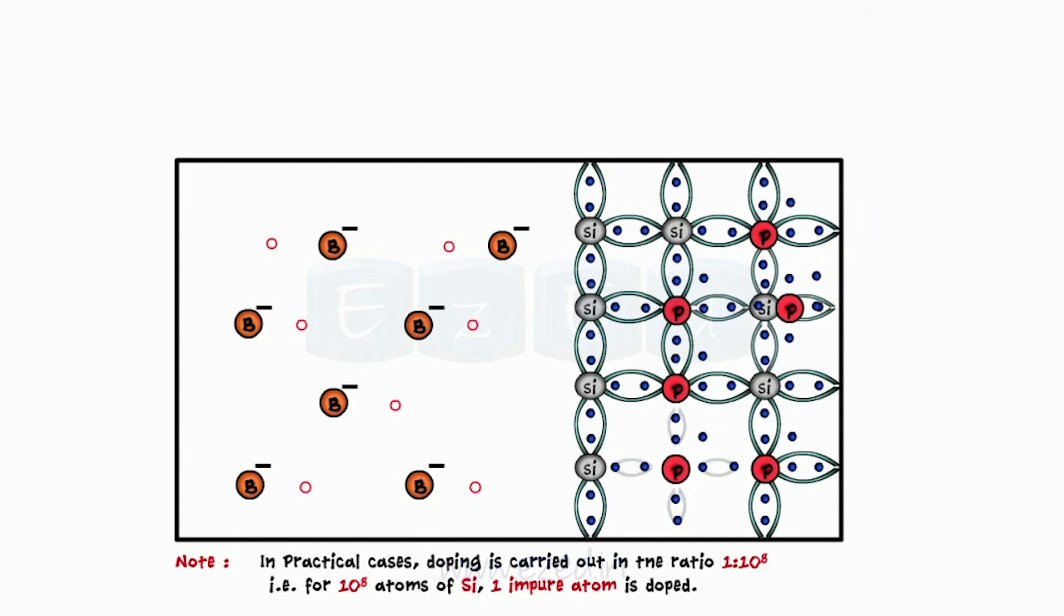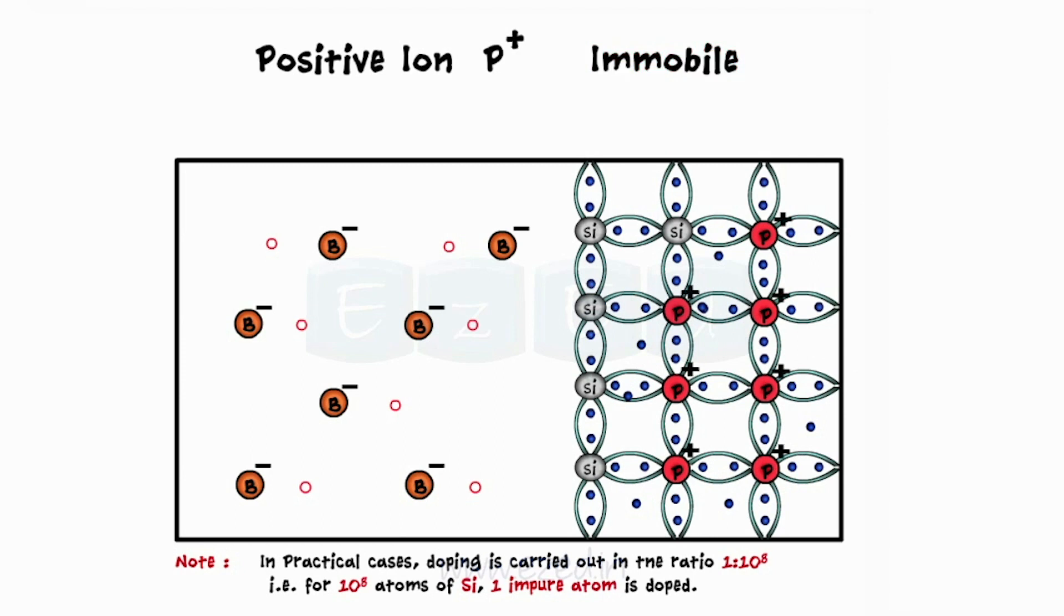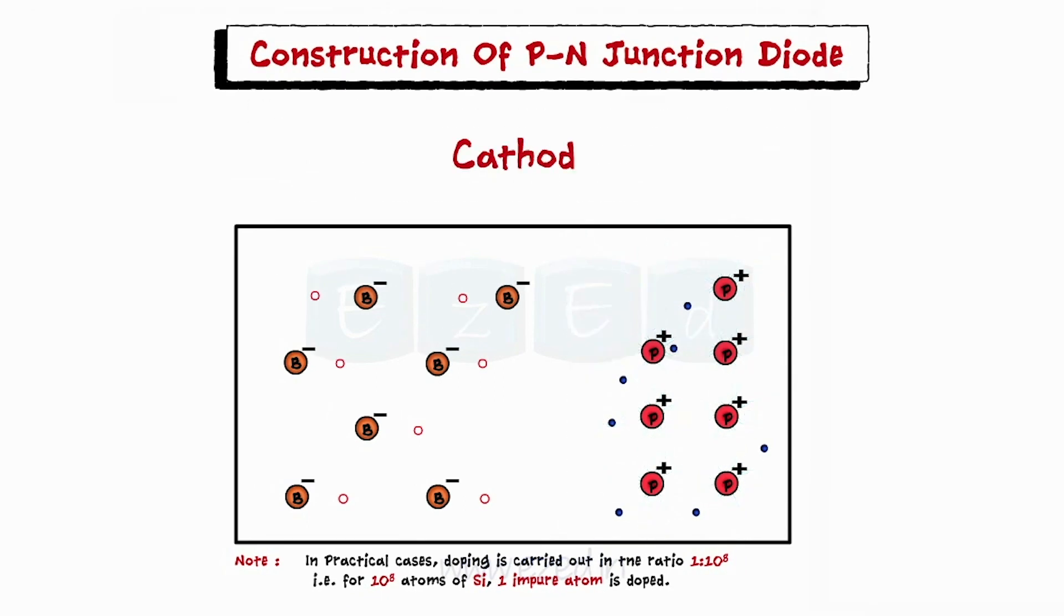As the phosphorus atom donates one electron, it loses its neutrality and becomes a positively charged immobile ion. The N region has free electrons and positive ions. This terminal is called as cathode and it acts as a negative terminal.